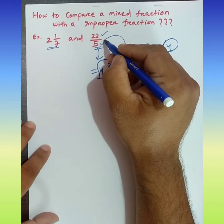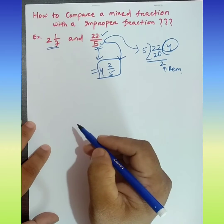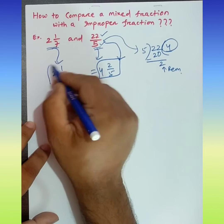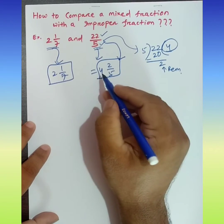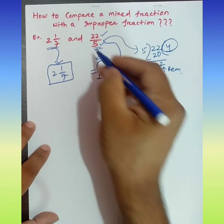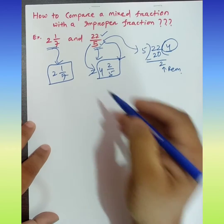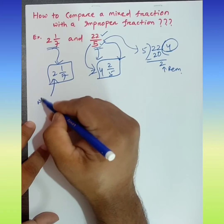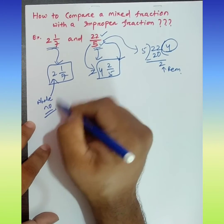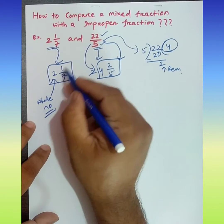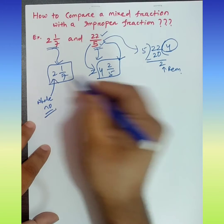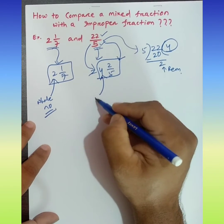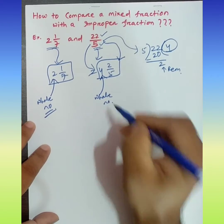Now we have converted the improper fraction to a mixed fraction. So look at 2 whole 1/7 and 4 whole 2/5. Now compare the whole numbers. The whole number of 2 whole 1/7 is 2, and the whole number of 4 whole 2/5 is 4.